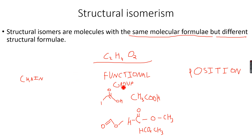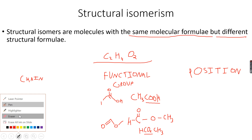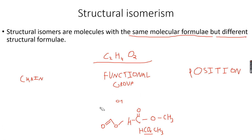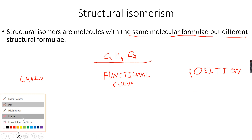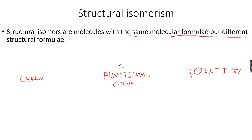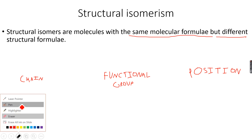These are specifically called functional group isomers because one molecule has the carboxylic acid functional group while the other has the ester functional group. Aldehydes and ketones are also functional group isomers, which we will cover in the carbonyl compounds playlist. Next, we move on to position isomerism.